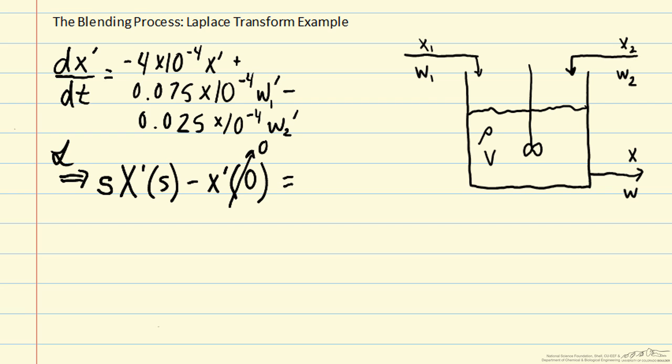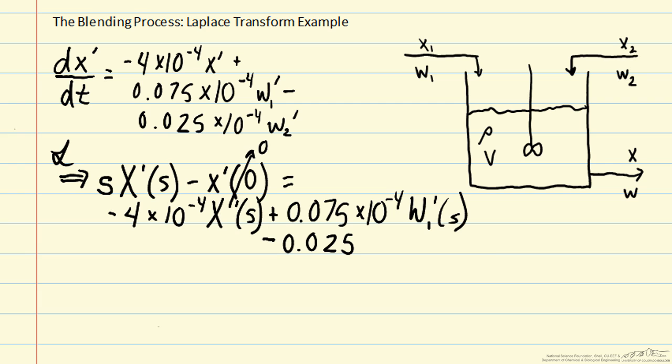And then that is equal to minus 4 times 10 to the minus 4 capital X' of s plus 0.075 times 10 to the minus 4 w1' of s minus 0.025 times 10 to the minus 4 w2' of s.